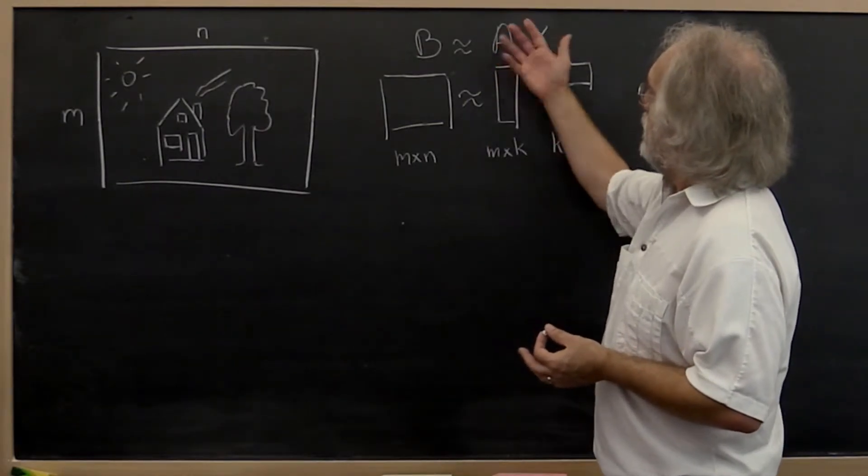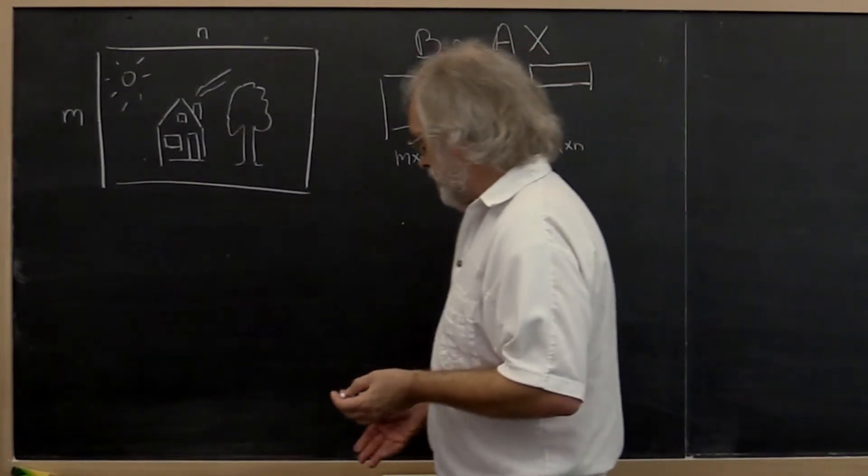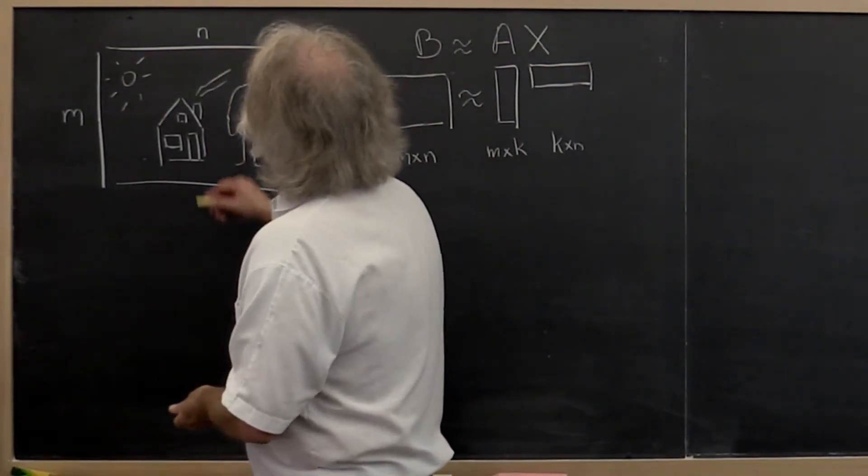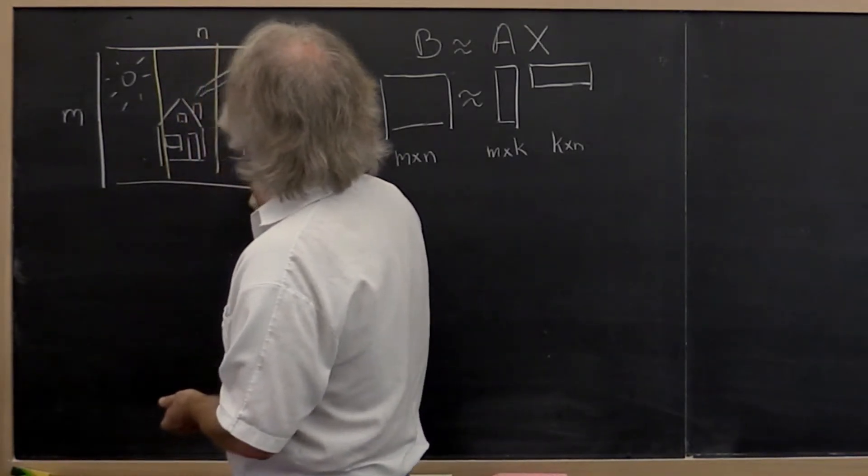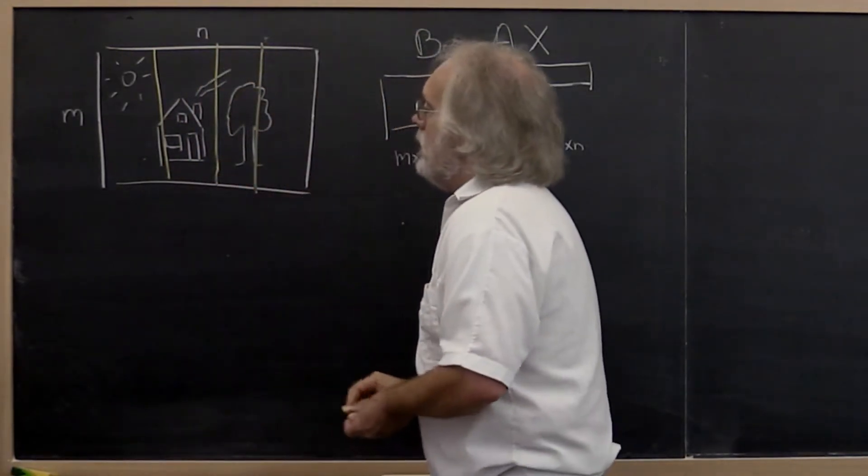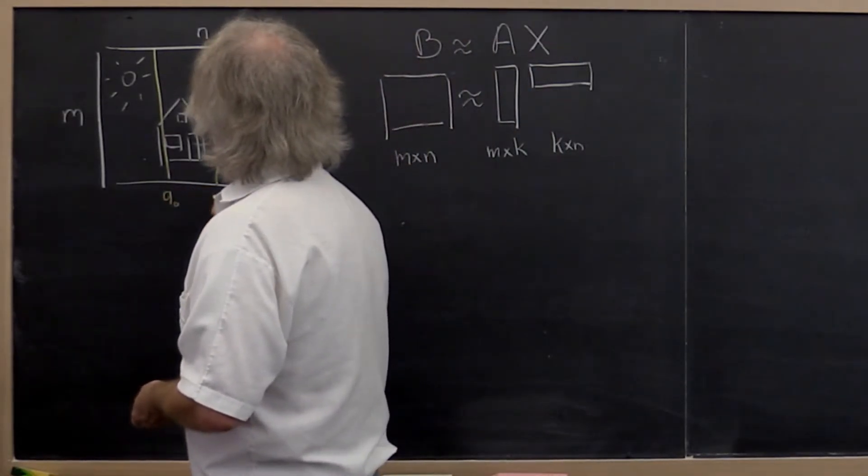One way for coming up with matrix A could be to say, we'll pick a couple of columns in our picture and we'll make those the columns in our matrix A.